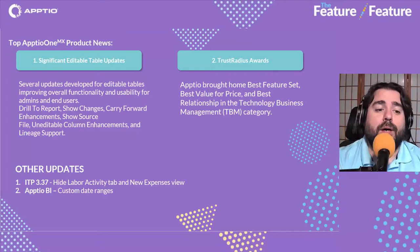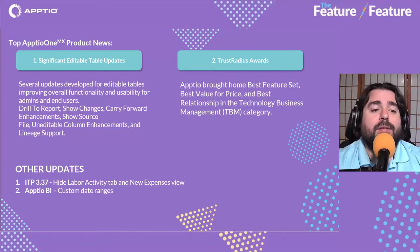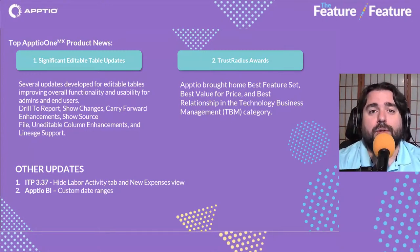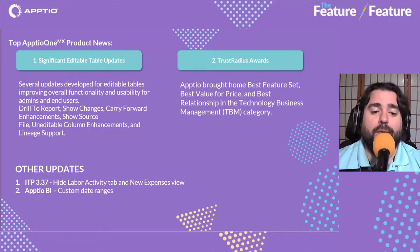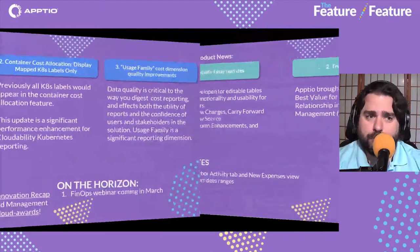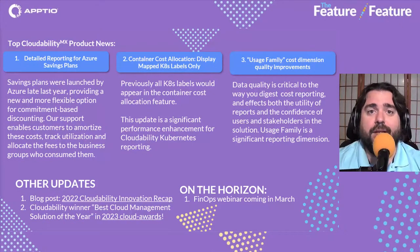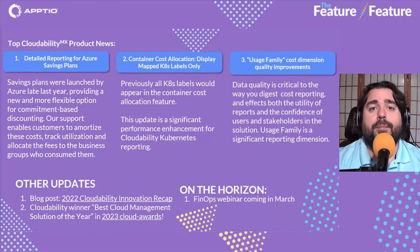Other updates include the ability to hide labor activity tabs and new expense views in IT planning. Aptio BI — our reporting solution for cross-platform visibility — now supports custom date ranges. For Cloudability, we have a detailed savings report for Azure savings plans, which we'll deep dive into with Kyle Totten in just a few minutes — essentially surfacing amortized costs and other details for Azure savings plans within Cloudability.